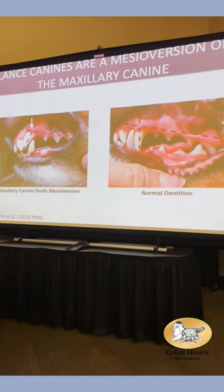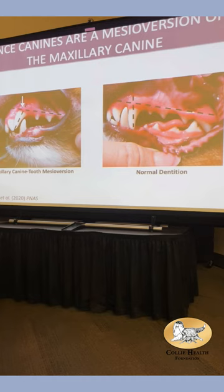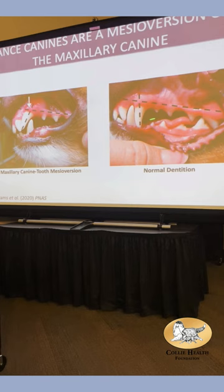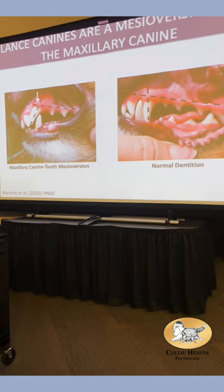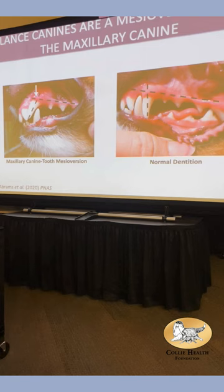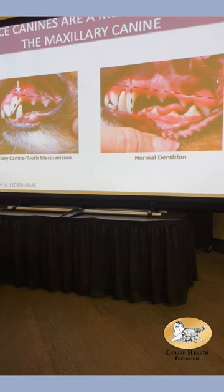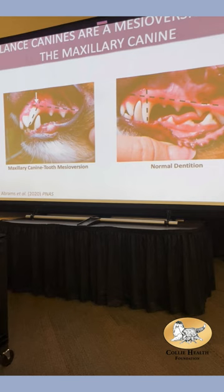The first thing I want to tell you about is maxillary canine tooth mesioversion — which is not that complicated. This is our canine tooth; maxillary means it's on top. The canine tooth is supposed to point straight down. If you have a mesioversion, your tooth is rotated, as it is in this picture — these are Shetland sheepdogs. This tooth points out like a lance or a spear, so we call it lance canine.